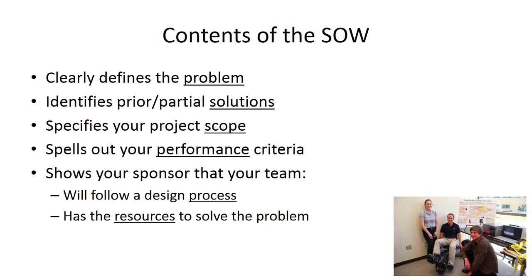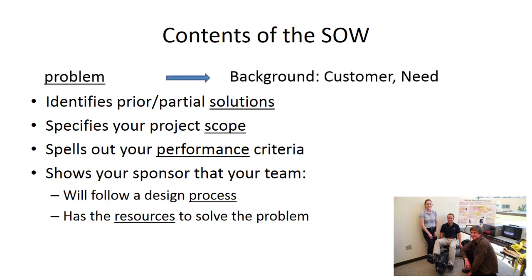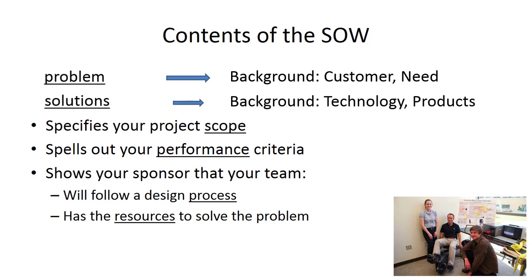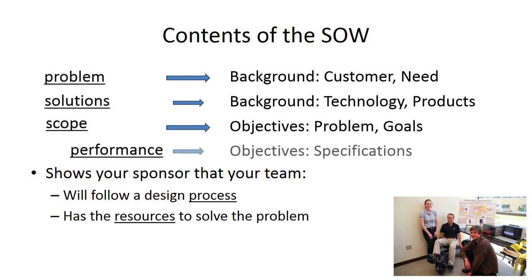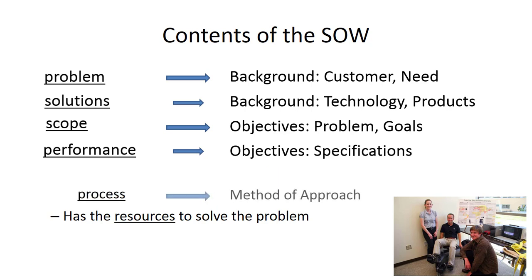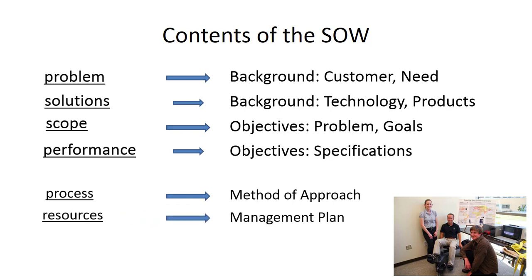Each of these topics relates to a specific item in the statement of work document. The problem relates to the background and the customer need — when you define the customer and the need, you are defining the problem. Solutions are captured in the background section devoted to the technology and existing or similar products. Scope shows up in the objectives section where you define the problem and goals, and performance is also in the objectives section, specifically the specifications part. Process shows up in your method of approach section, and resources are in your management plan.